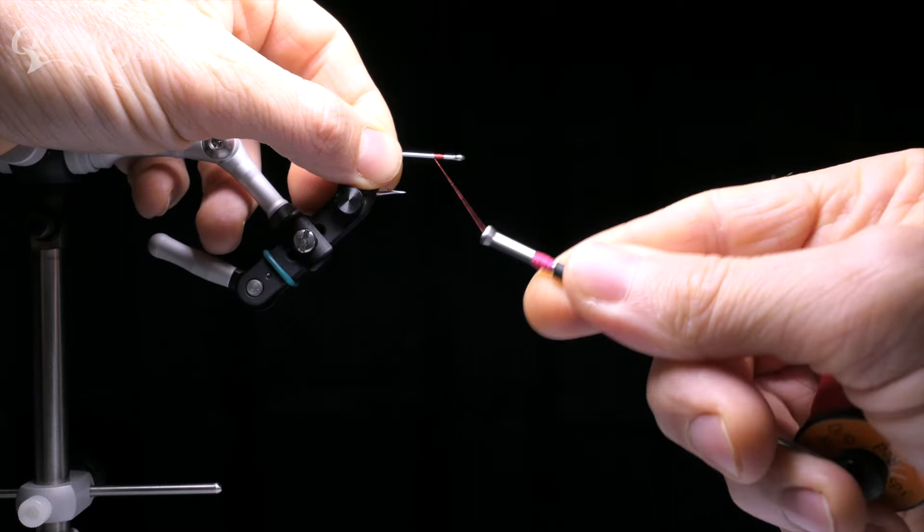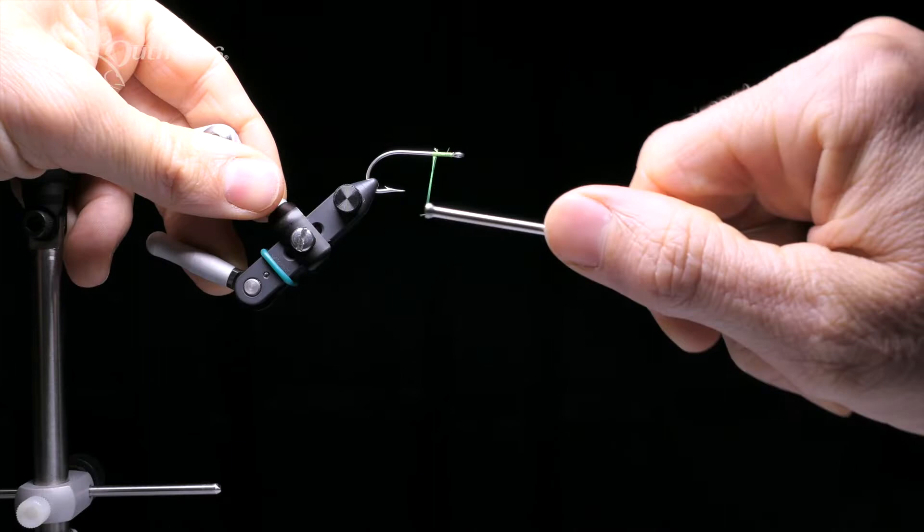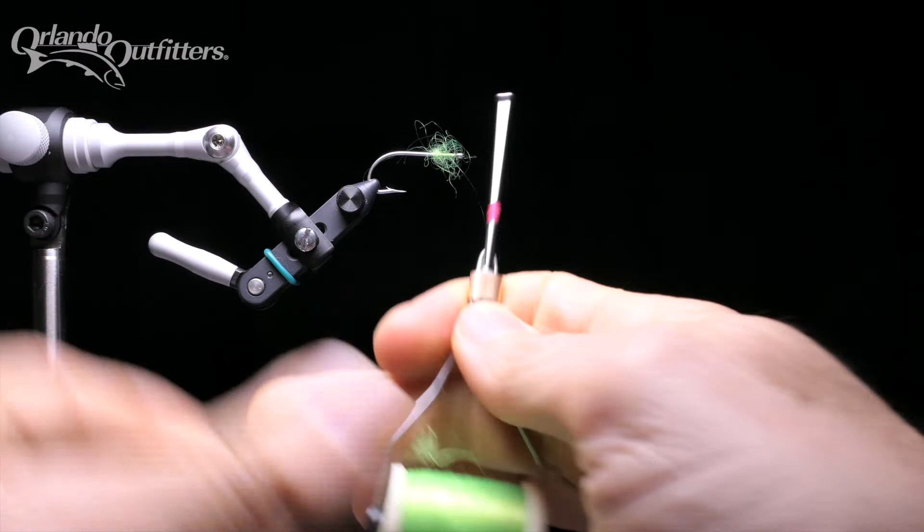When you start using a new thread, it's a good idea to learn just how much tension you can apply before it breaks. Hold the bobbin at different angles as you pull and see if the angle makes a difference.